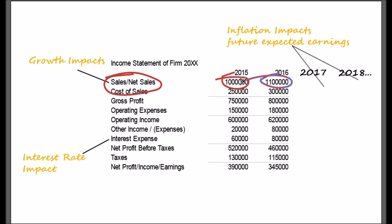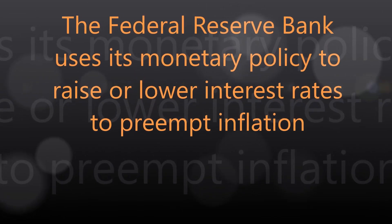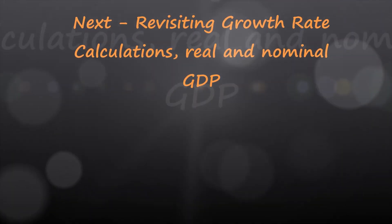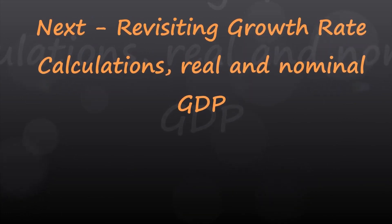The reverse happens during a recession. A recession is defined as two consecutive quarters when the real GDP is negative. In this scenario, the central bank reduces interest rates to boost spending. Lower costs of borrowing for consumers and corporates induces spending and investments. Thus, it is usually seen that when the real GDP moves above or below a sustainable growth rate, the central bank uses its monetary tools to bring it back to a sustainable level.